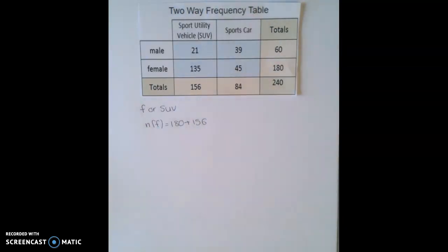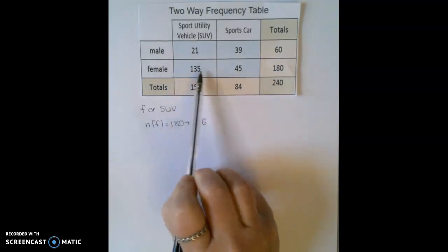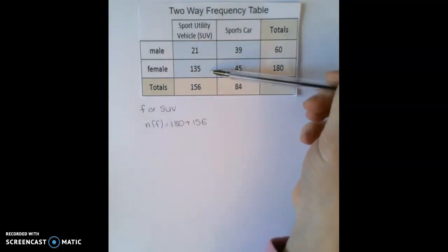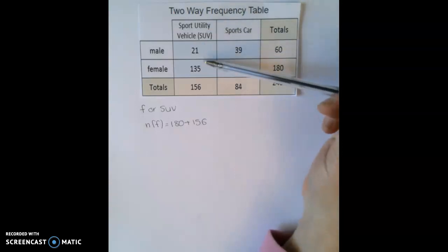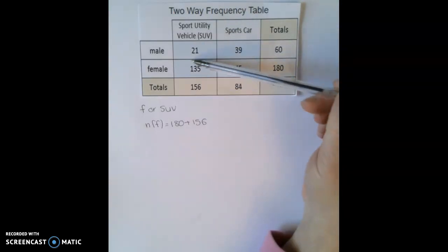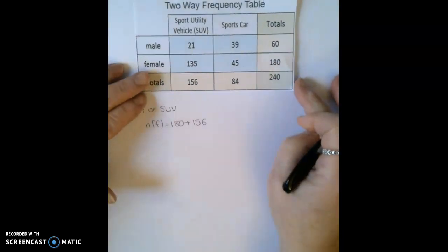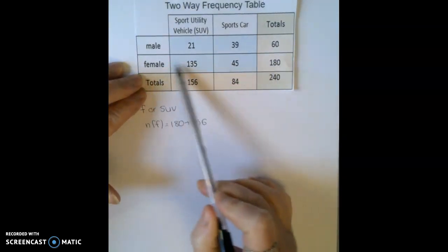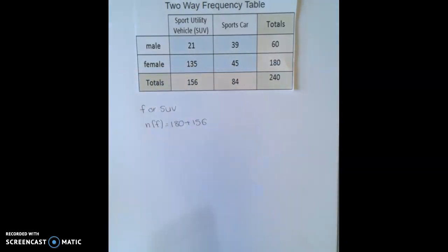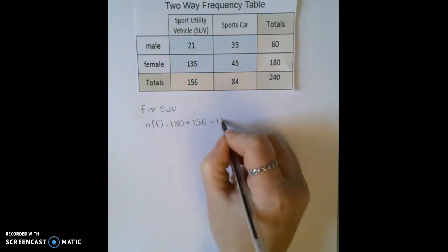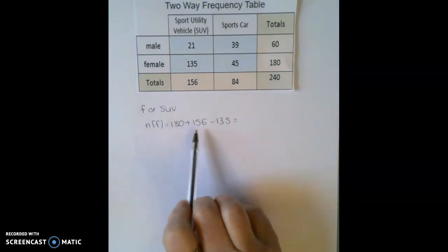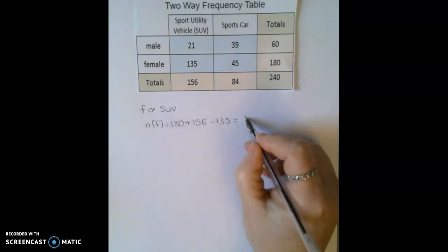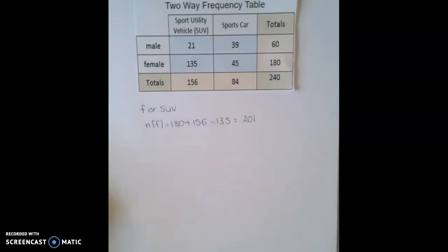Now if you remember from the example in the video, we've counted the intersection here, where the column and the row cross each other twice. So we've counted it in this row here, and we've also counted it in this row here. So because we've counted it twice, we need to take it off from our total. So that now becomes 180 add 156 minus 135, which gives us a total of 201.